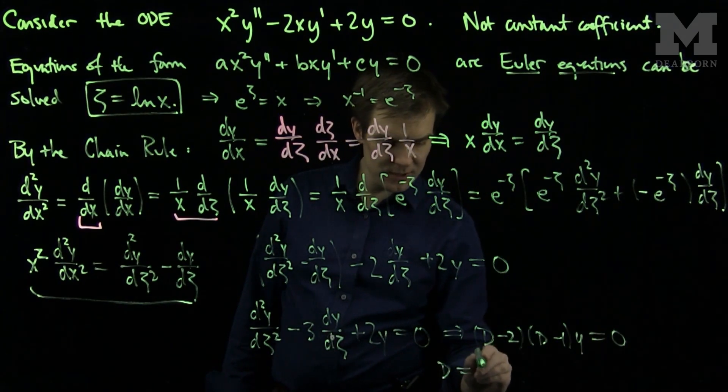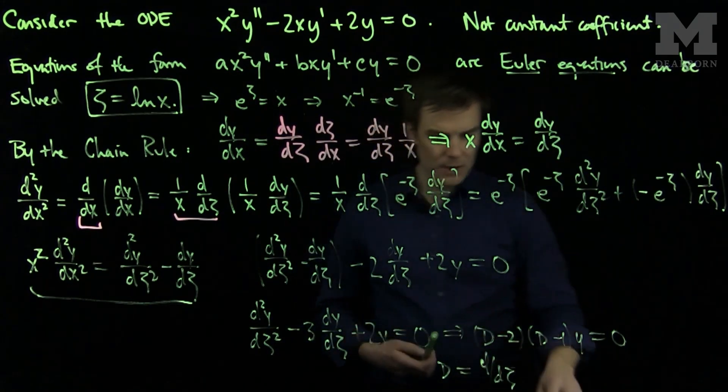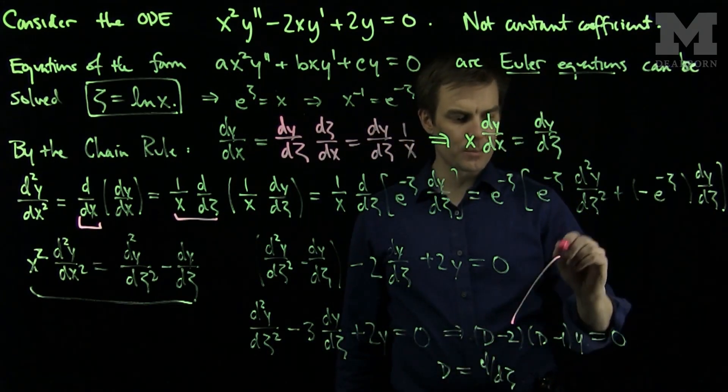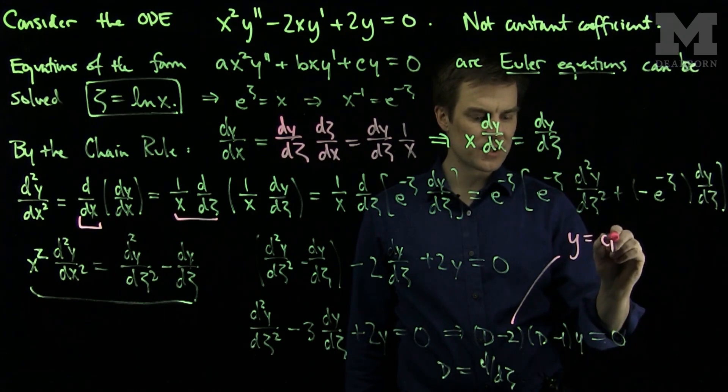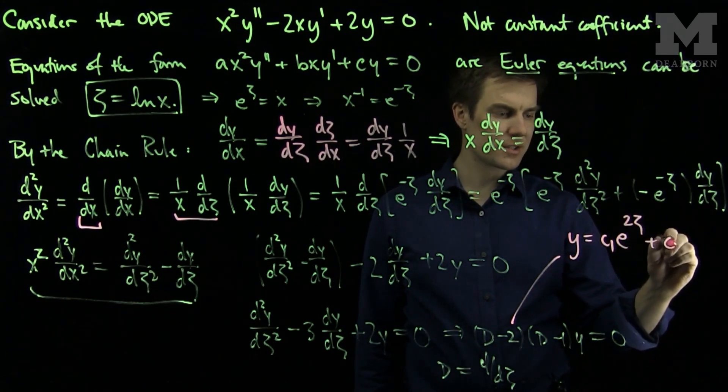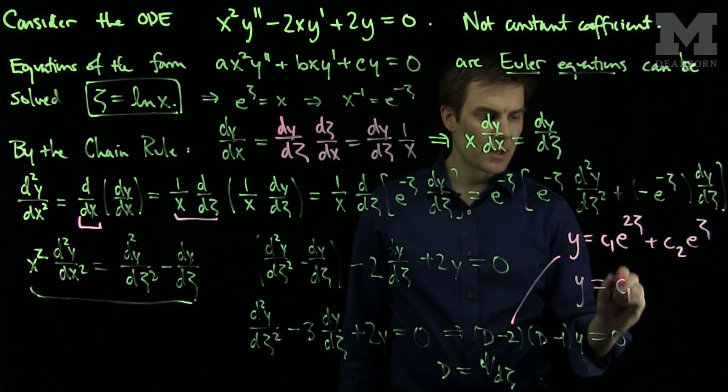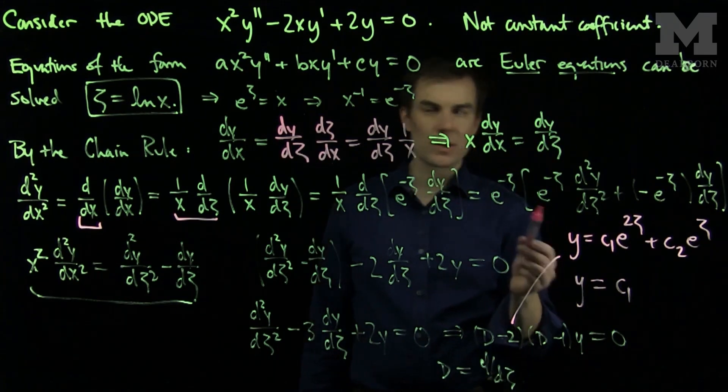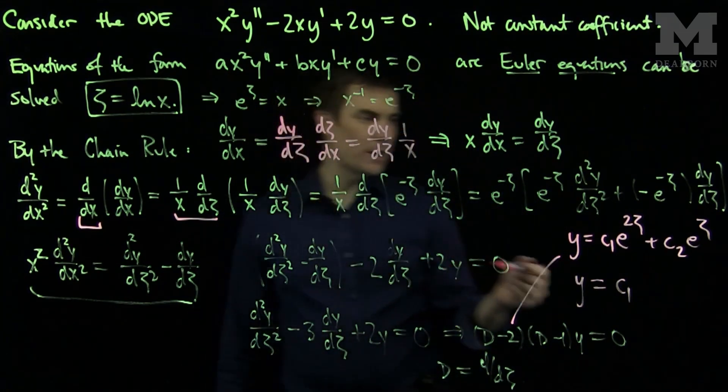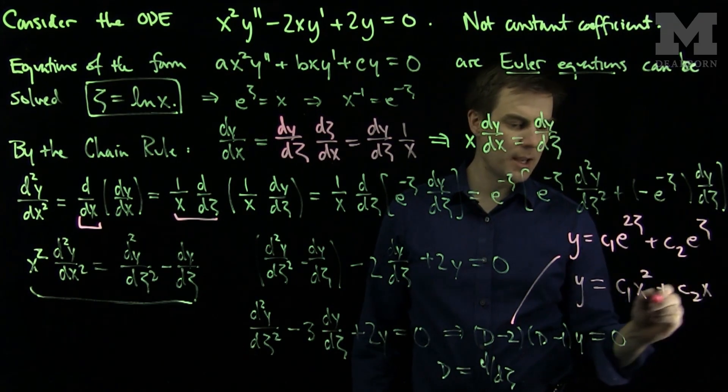Where here now d is d by d zeta. And now we can write down our solution. Our solution becomes y is equal to c1 e to the 2 zeta plus c2 e to the zeta. But we need to convert back to x. e to the 2 zeta will be x squared. And e to the zeta will simply be x.